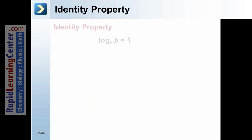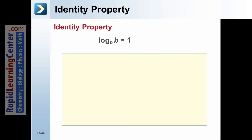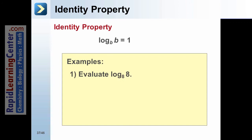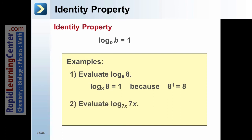Identity Property of Logarithms: Log base b of b equals 1. Example 1: Evaluate log base 8 of 8 — log base 8 of 8 equals 1 because 8 to the first power equals 8. Example 2: Evaluate log base 7x of 7x — log base 7x of 7x equals 1 because 7x is the base and the answer is 7x, so the exponent must equal 1.